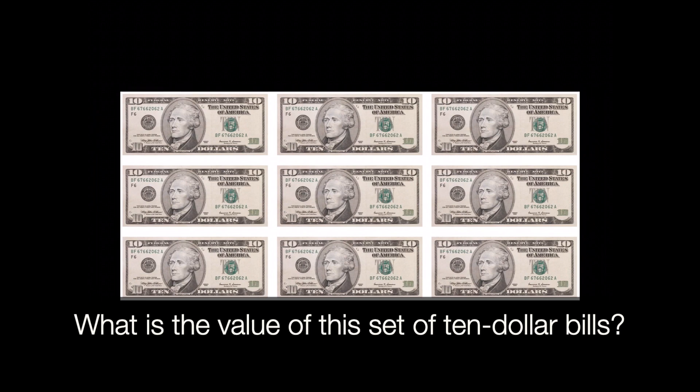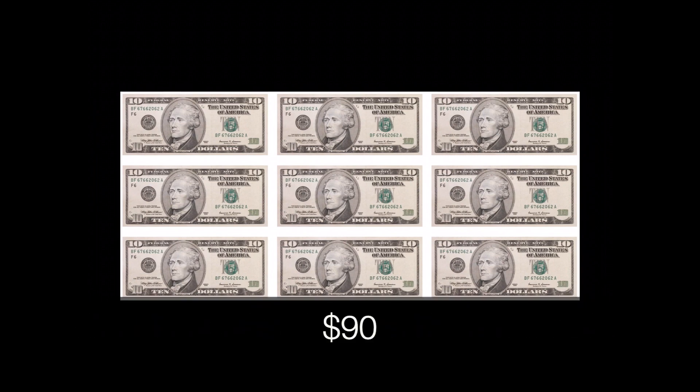Okay, here's another one. We have nine ten dollar bills. So it would be great if we skip count by tens. Ten, twenty, thirty, forty, fifty, sixty, seventy, eighty, ninety. So this set of ten dollar bills equals ninety dollars.